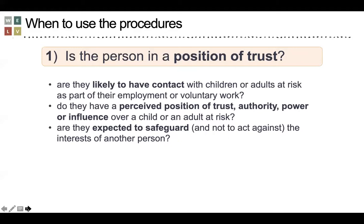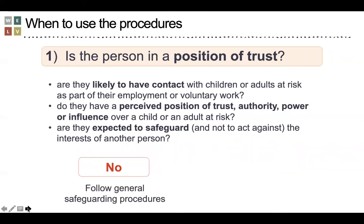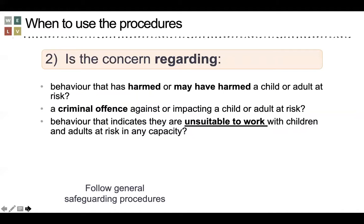Are they expected to safeguard the interests of another person? If the answer is no, then Sections 2 to 4 of the procedures must be followed in relation to the child or adult at risk. If the answer is yes, the next question to consider is: is the concern regarding behaviour that has harmed or may have harmed a child or adult at risk, a criminal offence, or behaviour that indicates they are unsuitable to work with children and adults at risk in any capacity? If the answer is no, we follow Sections 2 to 4. If yes, we consider the next stages.